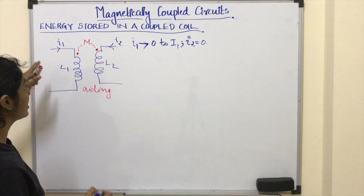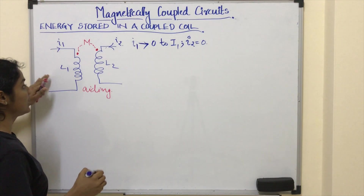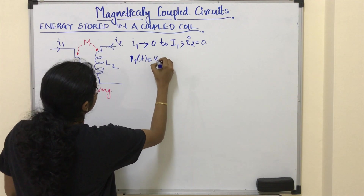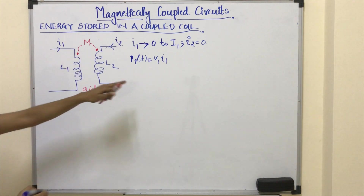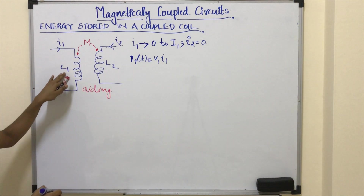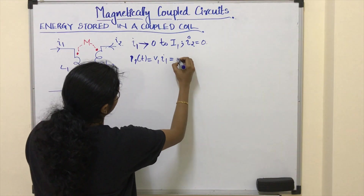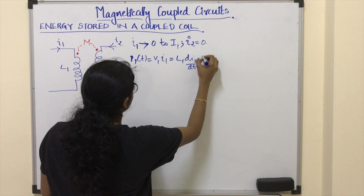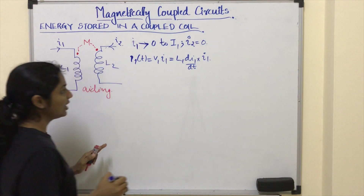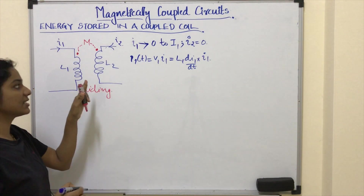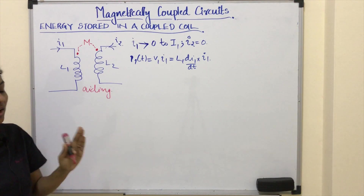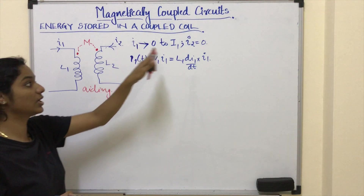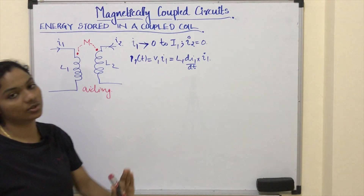In this case, the power in coil 1 is given by V1 times I1, and we know voltage is nothing but L1 times dI1/dt, so power is L1·(dI1/dt)·I1. Here we are not considering the power in coil 2, because the power associated with coil 2 is 0 since I2 equals 0.